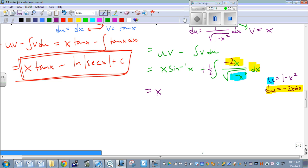So we end up with x times inverse sine of x plus 1 half times the antiderivative of 1 over square root of u, which is the same as u to the negative 1 half du.